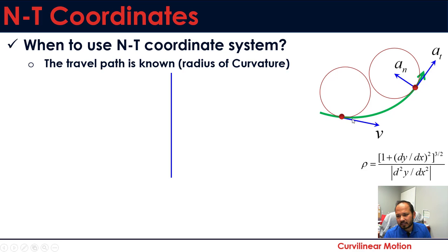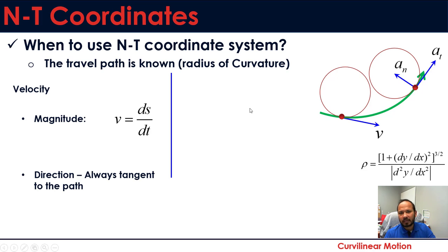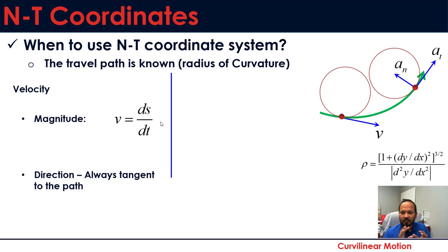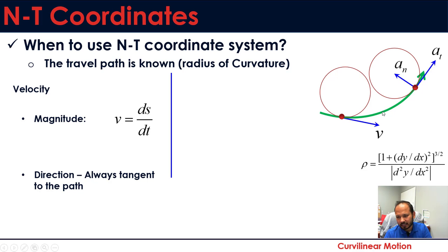In the NT system, velocity is always tangent to the path at any point. The magnitude of velocity is found by taking the first derivative of position. For the direction of velocity, at any point on the path you draw a tangent to the curve — if you know the path equation y = f(x), taking its first derivative gives you the tangent direction, and then using inverse tangent gives you the direction of velocity.